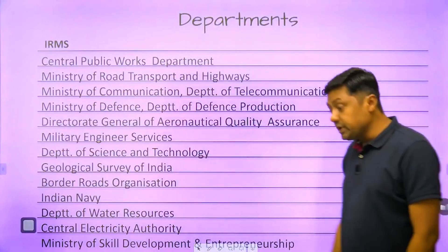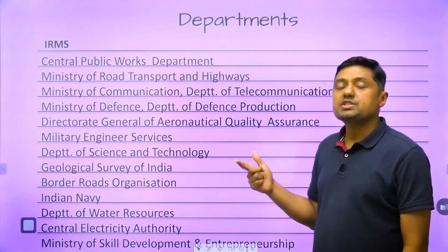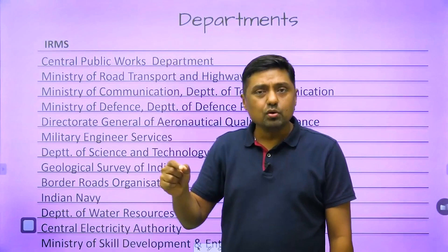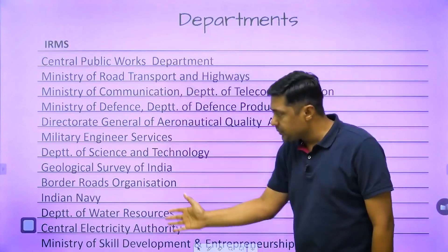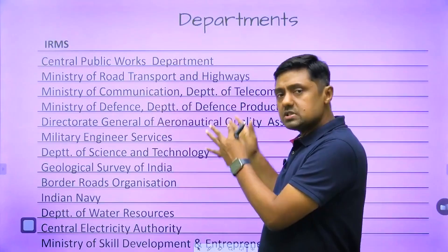Regarding departments through the engineering services exam — a recent development is IRMS (Indian Railway Management Service) for technical posts such as electrical, mechanical, civil, signal and telecommunication, and stores. Through engineering services you can join various departments, and in every department you become a Class A officer. The pay band and pay matrix remain the same across all departments.